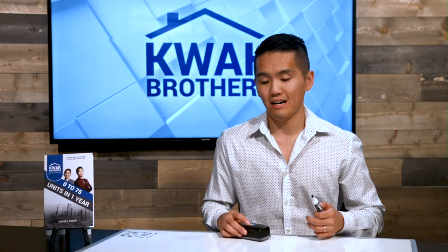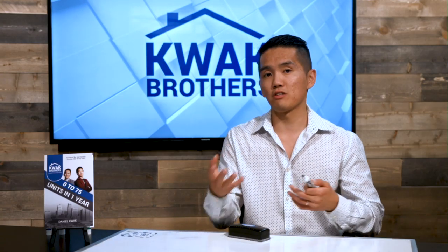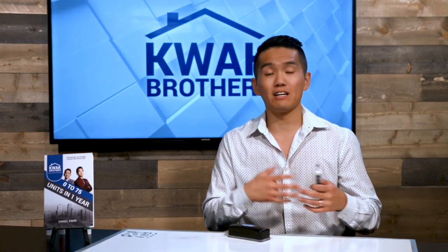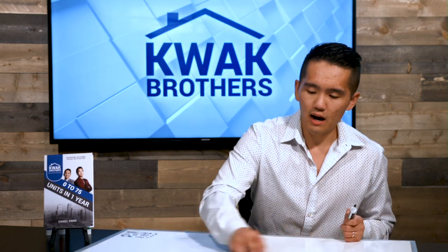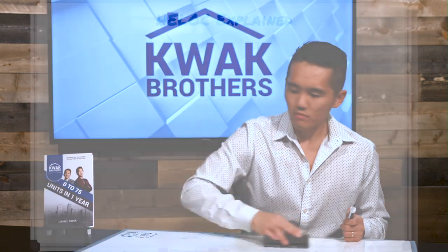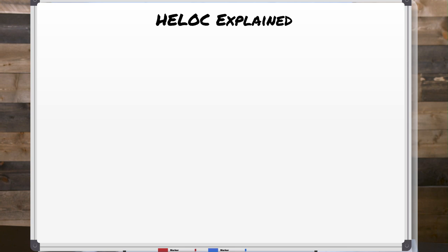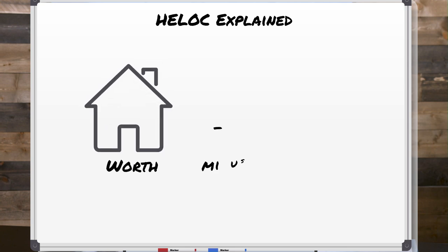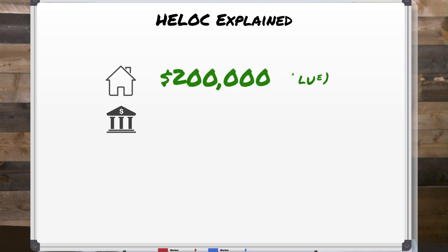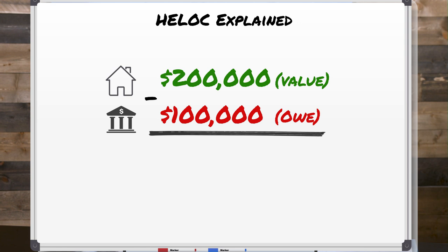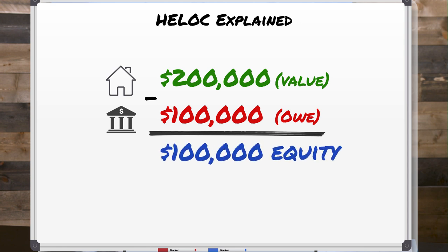I know a lot of you guys know what home equity is — you guys are educated and sophisticated — but I want to make sure everyone's on the same page. Home equity is essentially what your home is worth minus what you owe on the property. So let's say your home value is $200,000 and you owe $100,000 as a mortgage; consequently your equity is $100,000.